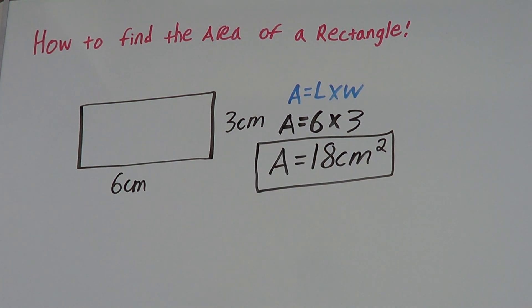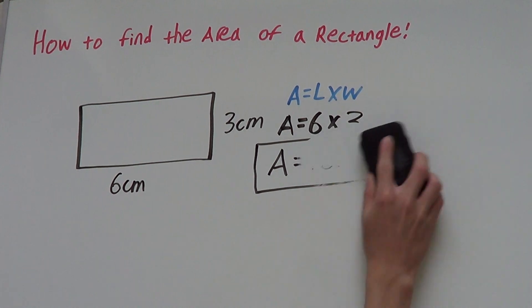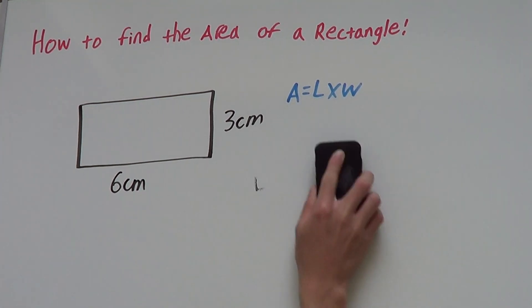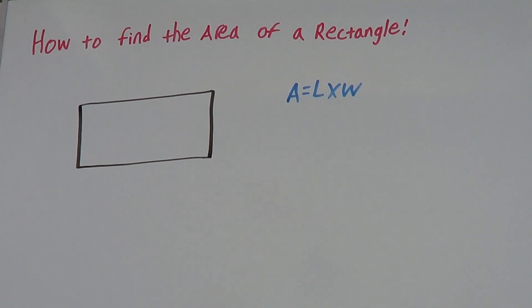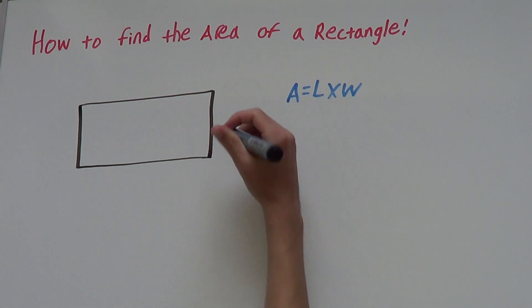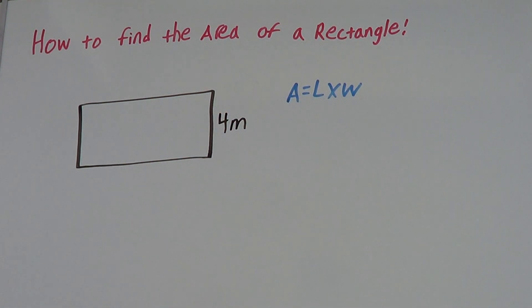We'll look at one more example just to make sure you know this. This time we'll say we have a width of 4 meters and a length of 7 meters.